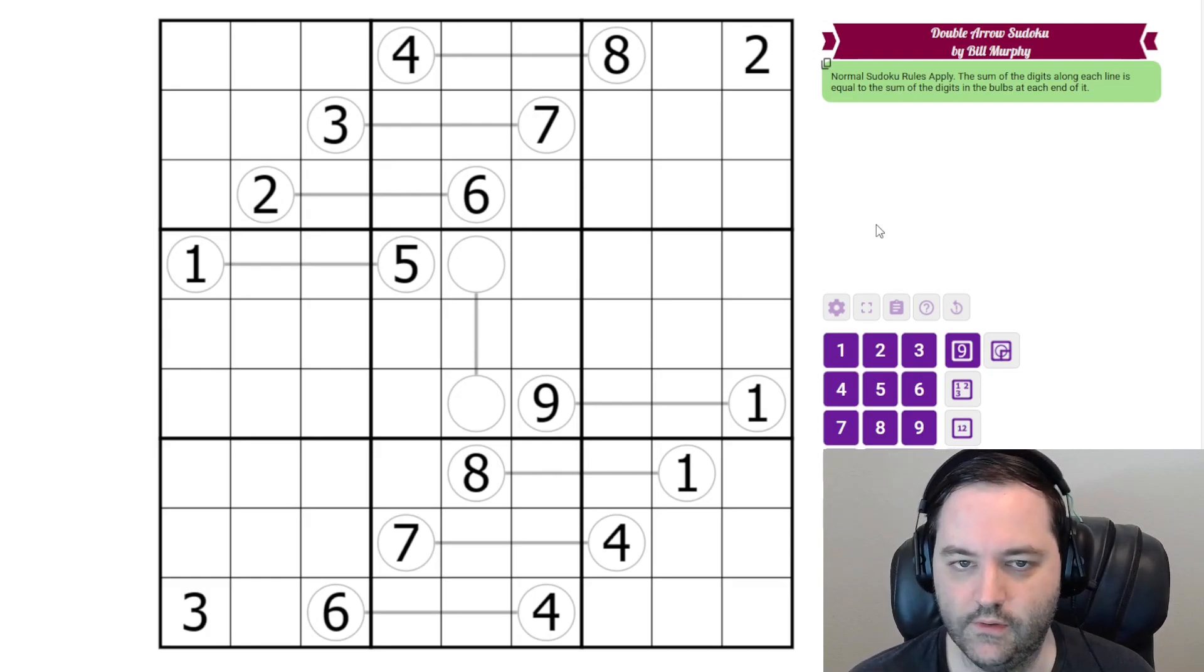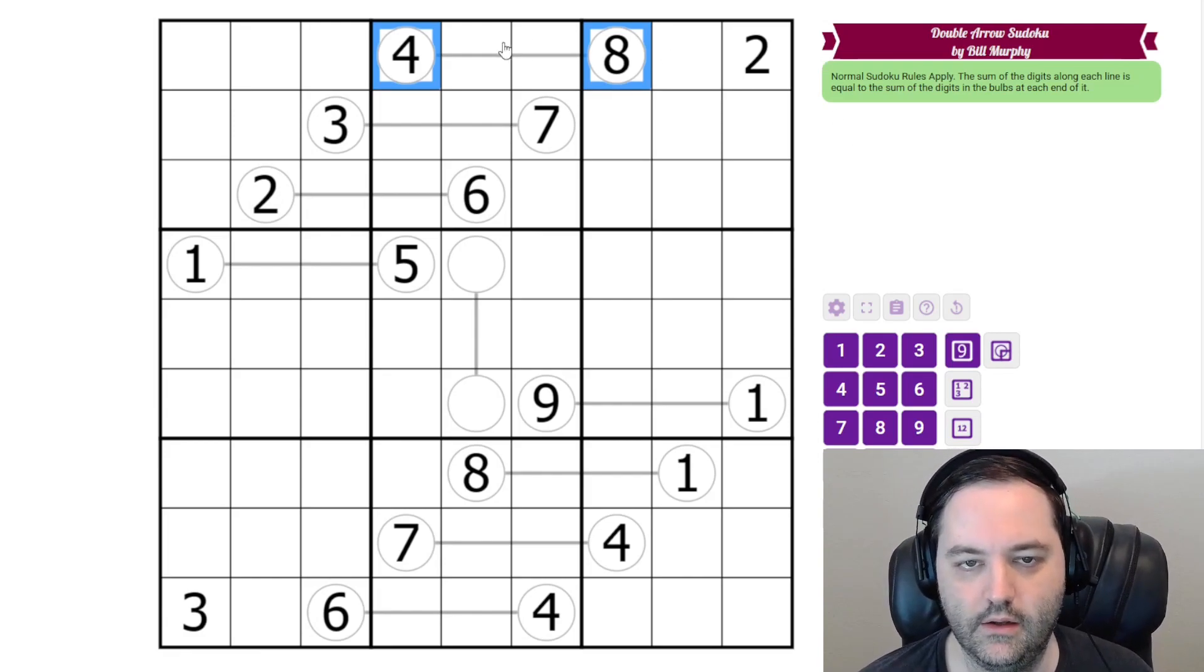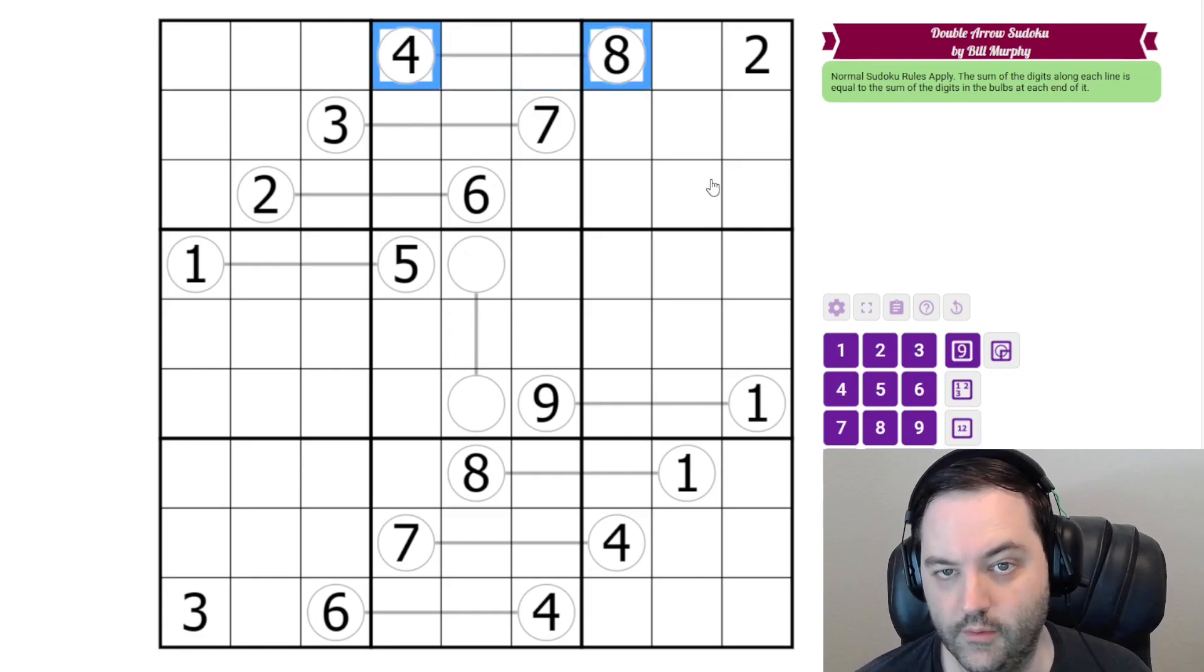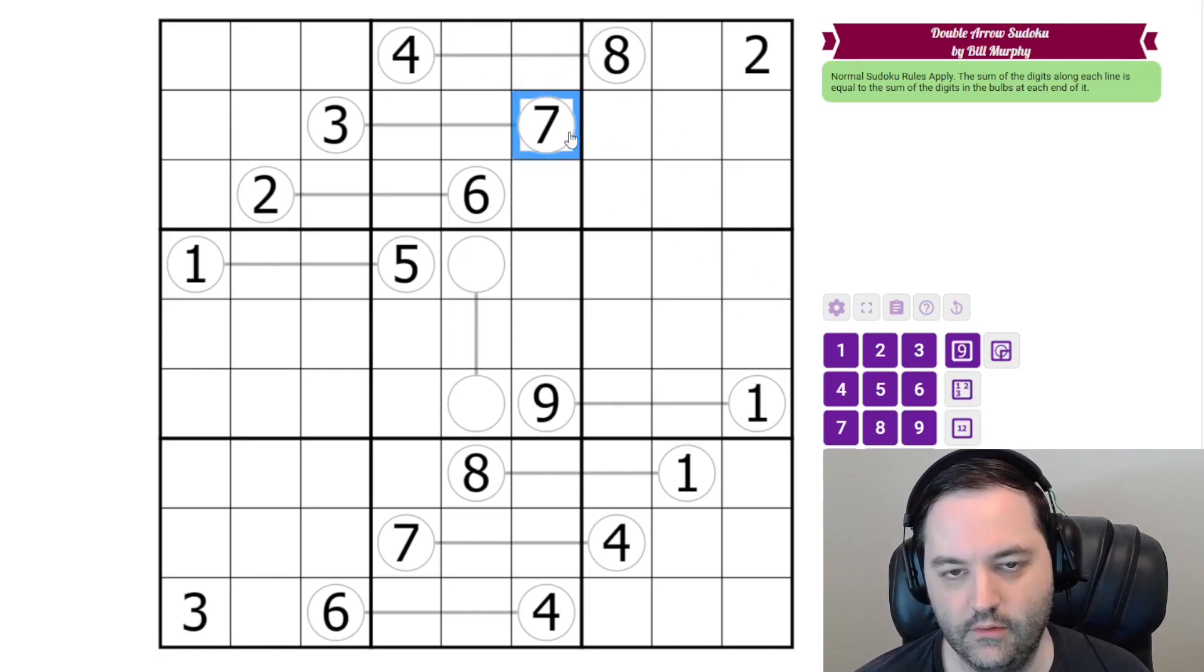Bill has given us a very gentle introduction, and we're going to solve it now. We'll start at the top. We have a 4 and an 8, summing to 12. There are only three ways to do that in two cells. One of them is 4, 8, which we're already using. Another is 5, 7, which we can't have because of this given 7. So we have to have 3, 9, and the 9 here tells us the order.